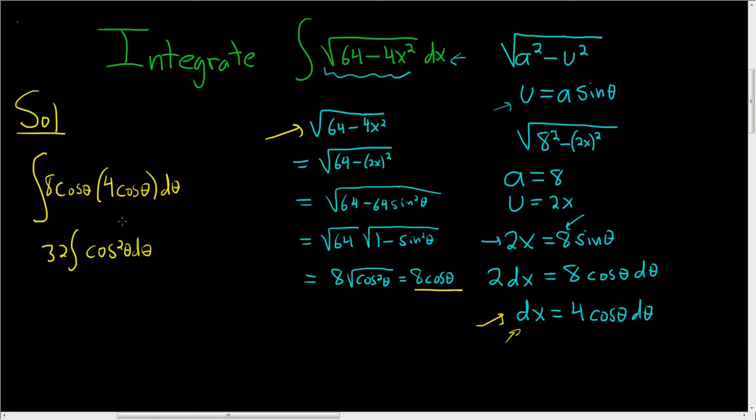To integrate cosine squared, we can use an identity. Cosine squared is equal to 1 half times 1 plus cosine 2 theta d theta.